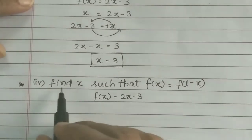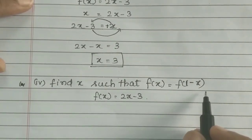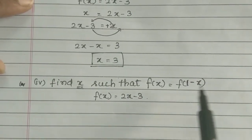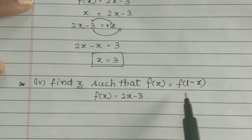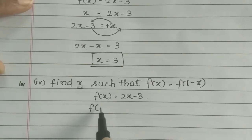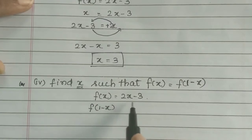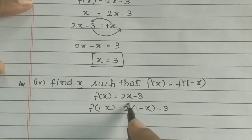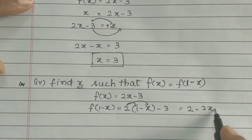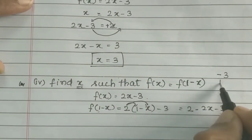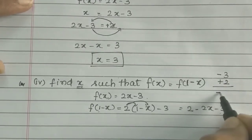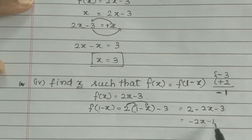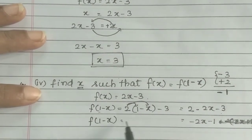Next option: find x such that f(x) = f(1 - x). First, let's find f(1 - x). Substituting (1 - x) into the function: f(1 - x) = 2(1 - x) - 3 = 2 - 2x - 3 = -2x - 1. So f(1 - x) = -2x - 1.